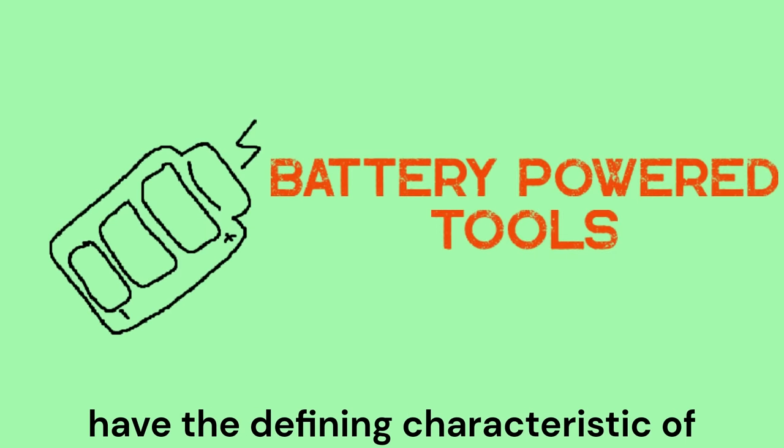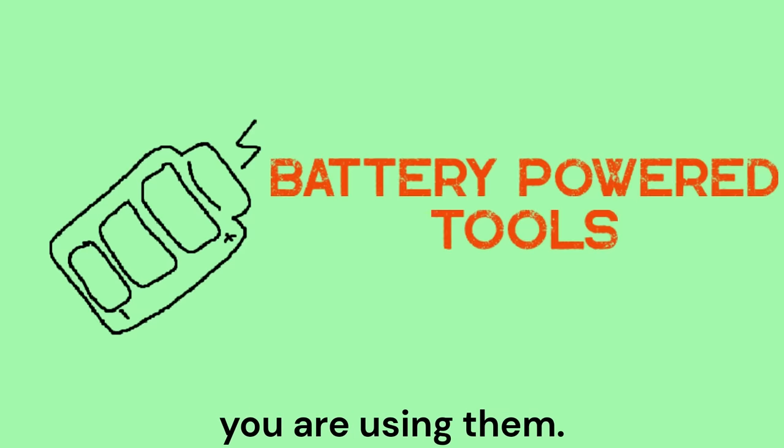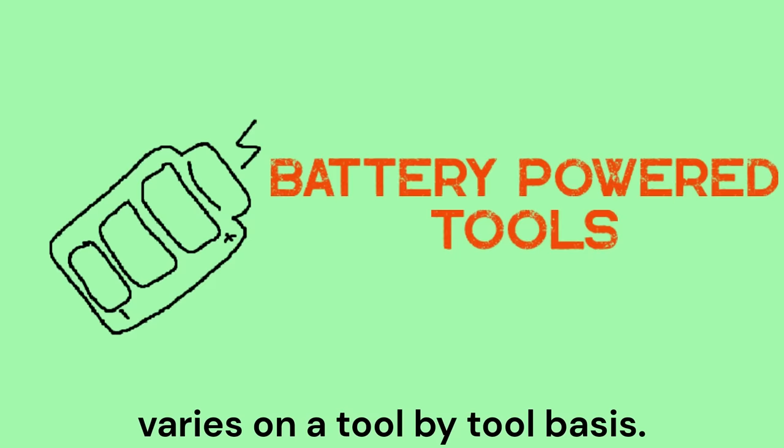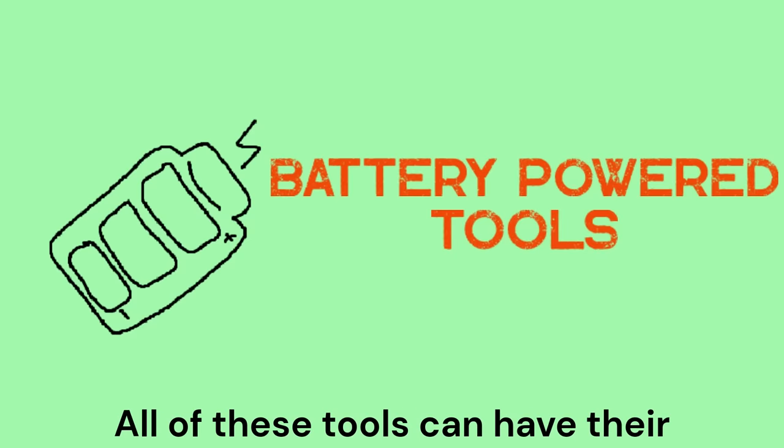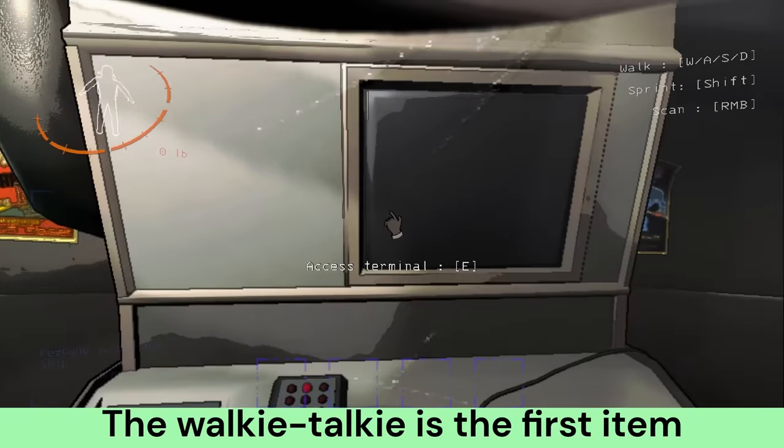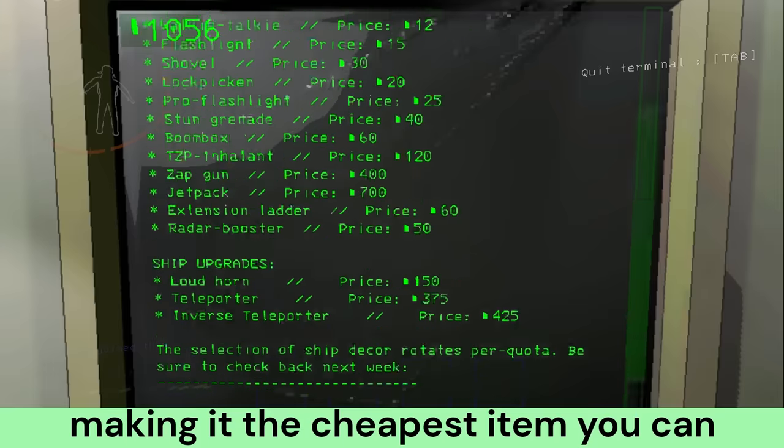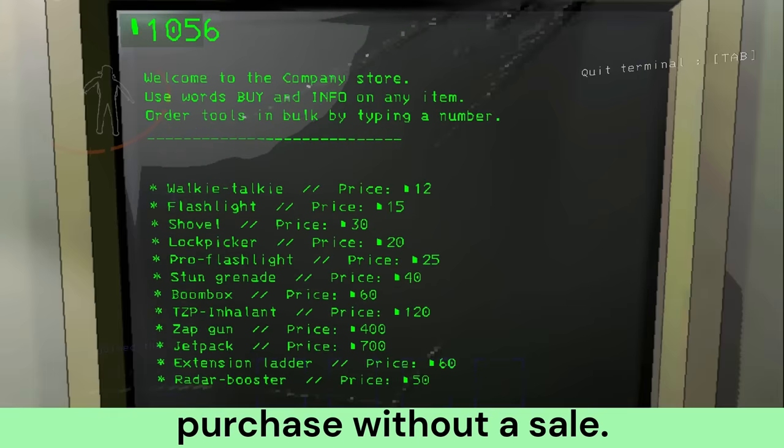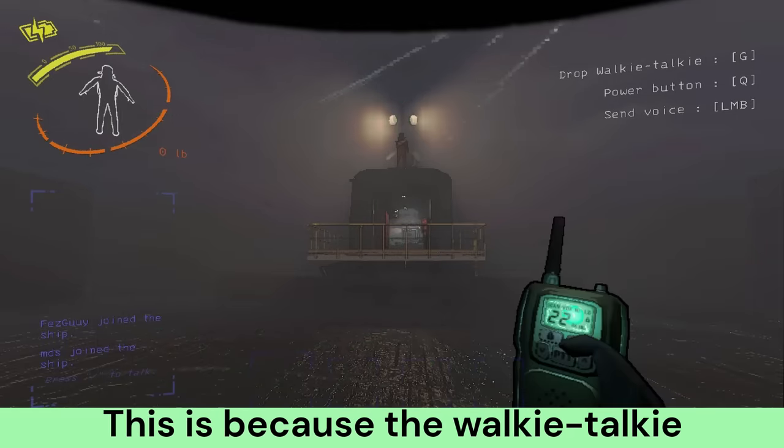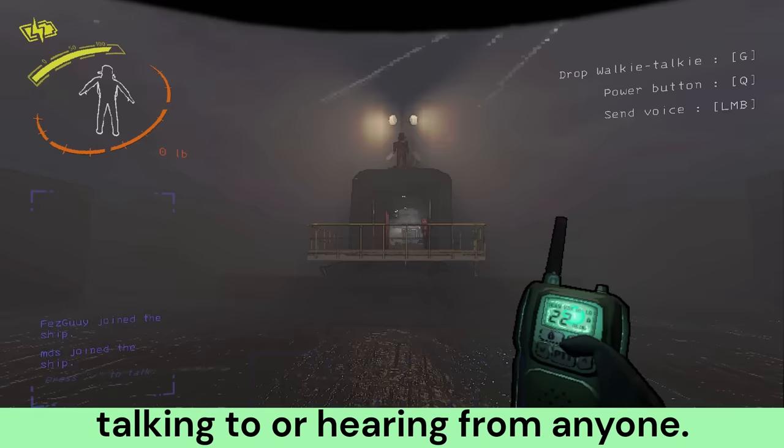Tools found in this category have the defining characteristic of having a battery life, which is denoted by a yellow meter appearing in the top left of your screen when you are using them. All of these tools can have their battery recharged by holding them and interacting with the coil inside your ship.